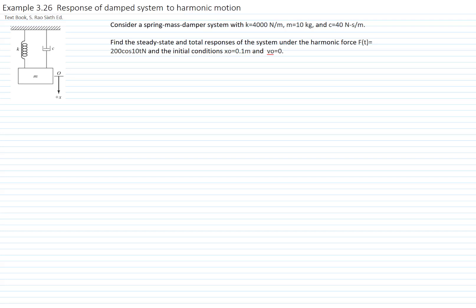This is problem 326, and we will find the total response of a damped system to harmonic motion. We have the spring constant, which is 4000 newtons per meter. We have the mass, which is 10 kilograms, and we have the damping constant, which is 40 newton-seconds per meter.